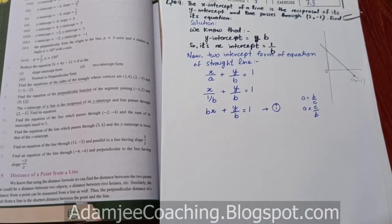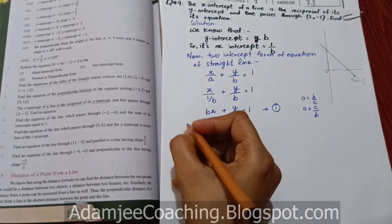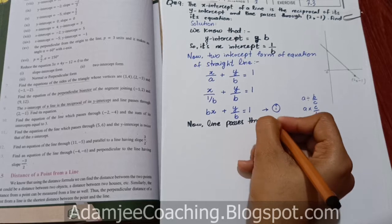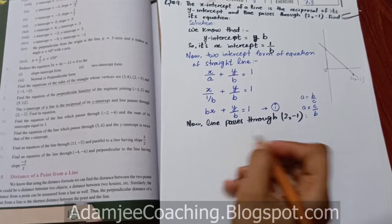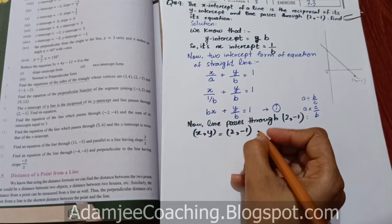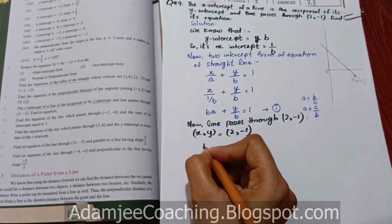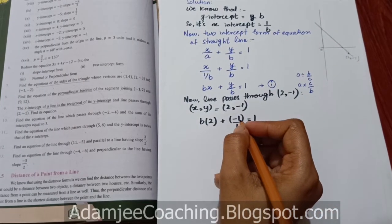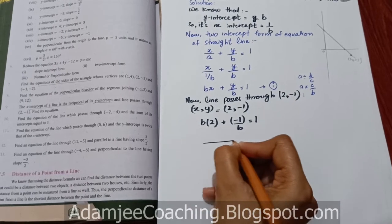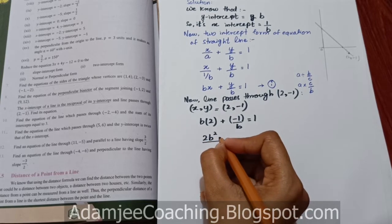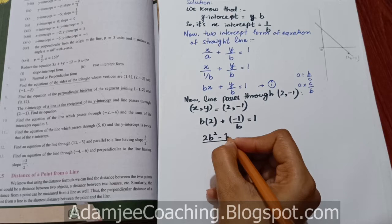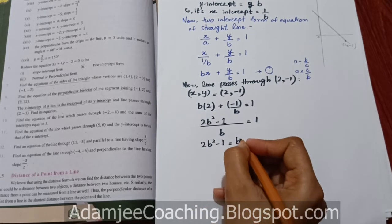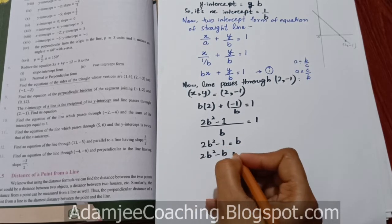اب line جو point 2, minus 1 سے pass ہو رہی ہے، ہم یہ equation 1 میں put کریں گے۔ x کی جگہ 2 اور y کی جگہ minus 1 آئے گا: b×2 plus (minus 1)/b equals to 1۔ اس کو simplify کریں، b سے multiply کریں: 2b² minus 1 equals to b، تو 2b² minus b minus 1 equals to 0۔